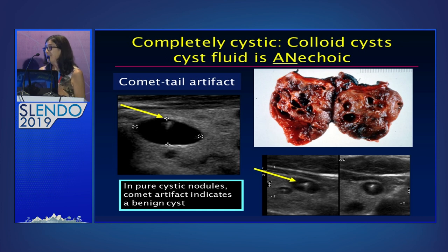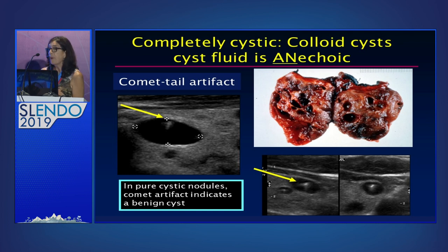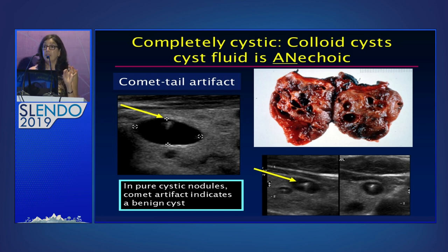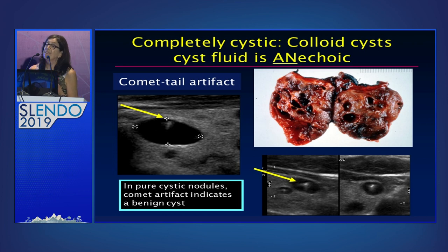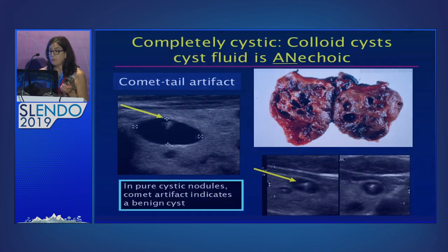Sometimes people talk about what is called comet tail artifact, which is a small smudge of brightness. That is a very benign finding, but only in a pure cyst. Comet tail artifact alone does not mean the nodule is benign, but if the comet tail artifact is in a pure cystic nodule, as it is here, this is a benign finding, and these nodules never need to be aspirated.